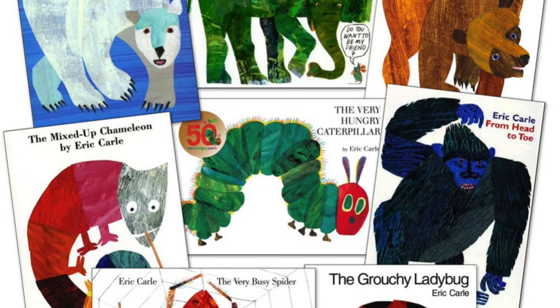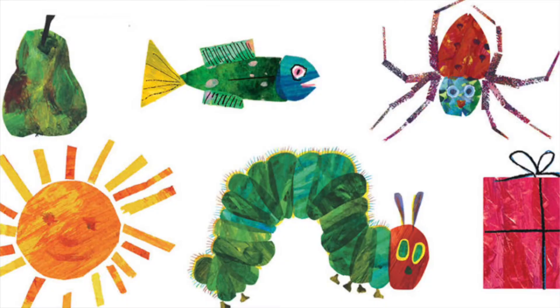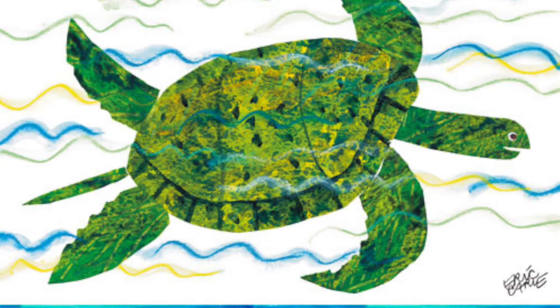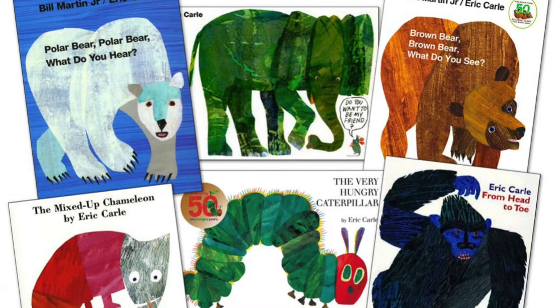His career as an illustrator and children's book author took off after he collaborated on Brown Bear, Brown Bear, What Do You See? He has illustrated more than 70 books, most of which he also wrote, and more than 145 million copies of his books have been sold around the world.